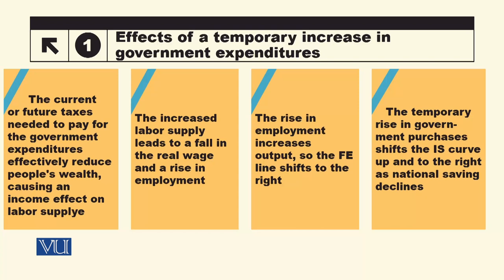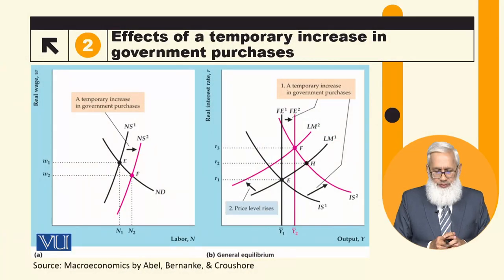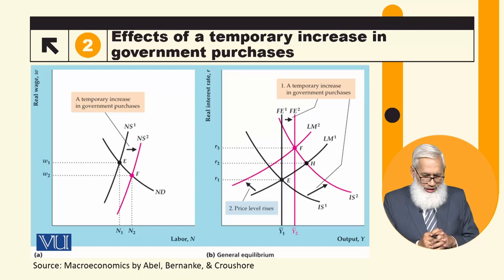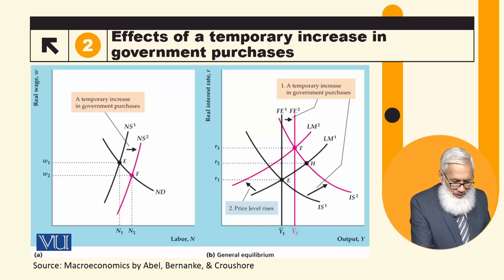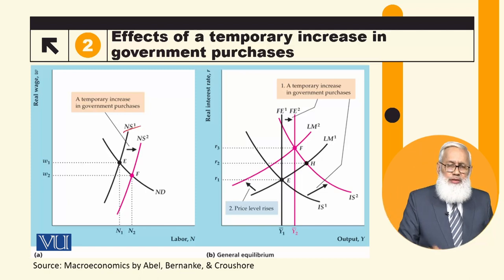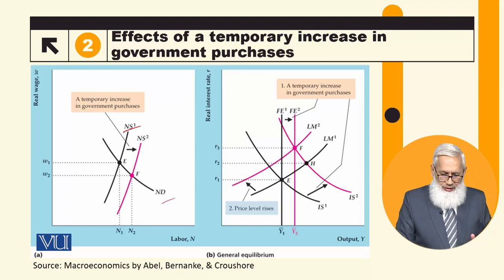In the goods market, government spending increases, aggregate demand increases, and the IS curve shifts rightward. All of these factors increase together — including the labor demand curve — due to the temporary increase in government spending.